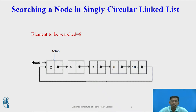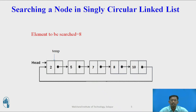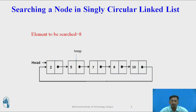Suppose this singly circular linked list contains 5 nodes with values 2, 5, 7, 8, and 10, and head is pointing to the first node, which is 2. Suppose I want to search for element 8 to check whether 8 is present. You declare a temporary pointer pointing to the first node, then traverse forward comparing the element to be searched with each data part.